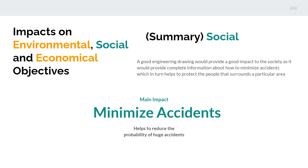Moving on to the social aspect — a good engineering drawing would provide a good impact to society as it provides complete information about how to minimize accidents, which in turn helps protect the people surrounding a particular area. The main point is to minimize accidents, reducing the probability of large accidents like the leakage of polypropylene plastic. We can utilize puncture-proof material to make puncture-proof containers so that the possibility of this particular accident can be reduced in the future.